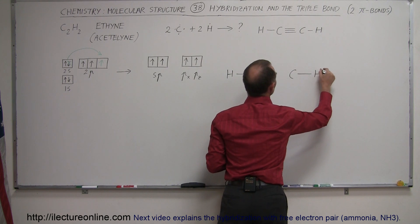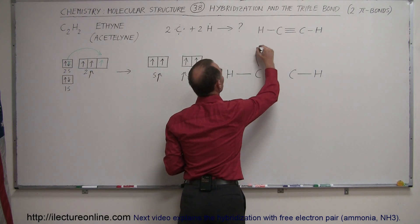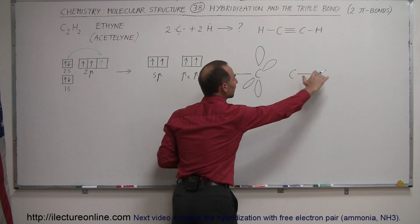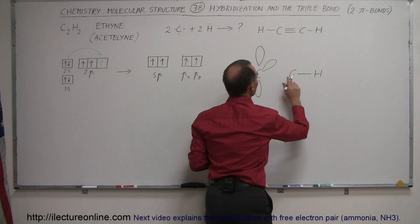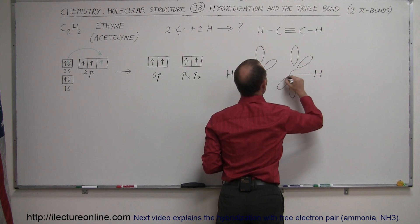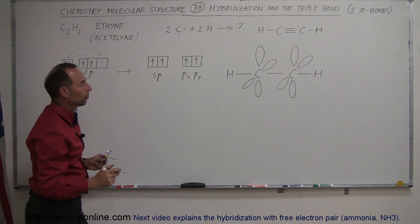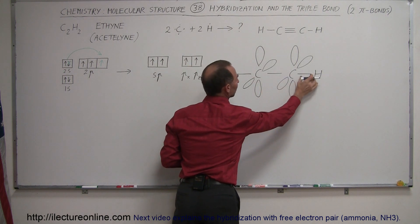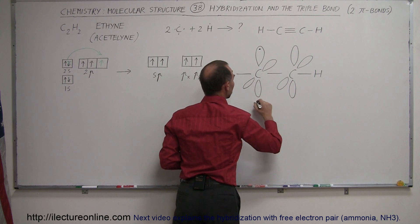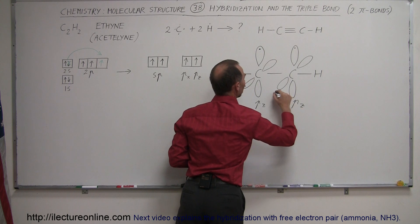We have one carbon with a single hydrogen in one linear direction, and another carbon with a single hydrogen in the opposite linear direction. Each carbon still has p orbitals: a pz orbital in the z direction and a px orbital in the x direction, both perpendicular to the carbon-hydrogen line. We have two electrons in each of the sigma bonding regions, and one electron in each of the p orbitals — one pz and one px on each carbon.